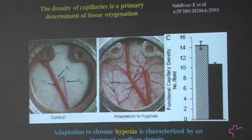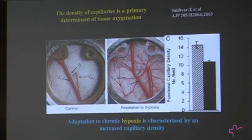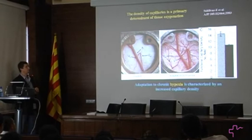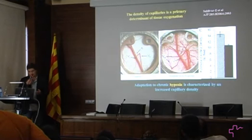This is nicely illustrated in adaptation to chronic hypoxia in animals. After a few weeks, the density of the capillaries is markedly increased, and this is done to minimize the diffusion distance from a single cell to the nutritive capillary.